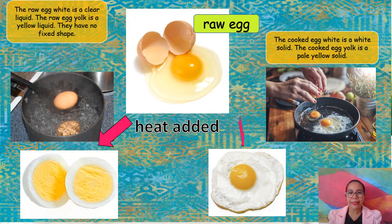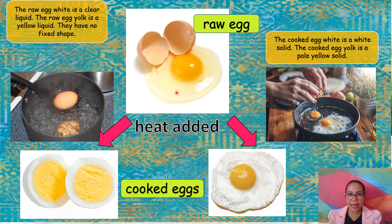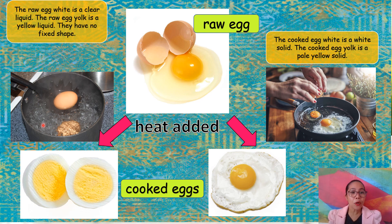Look at this picture. This is a raw egg. This is the egg white and this is the egg yolk. The raw egg white is a clear liquid. The raw egg yolk is a yellow liquid. They have no fixed shape, meaning they just follow the shape of the container. But when heat is added, like you cook them, what happens to the eggs?